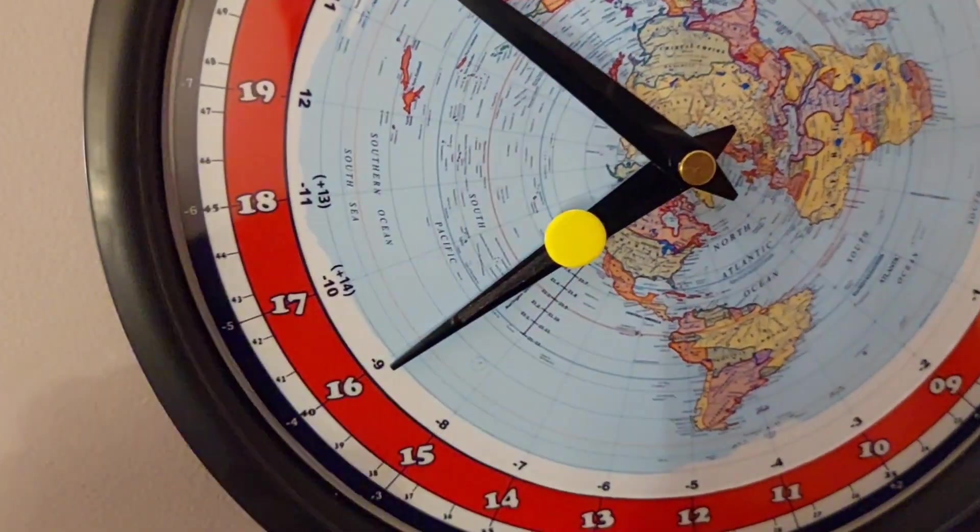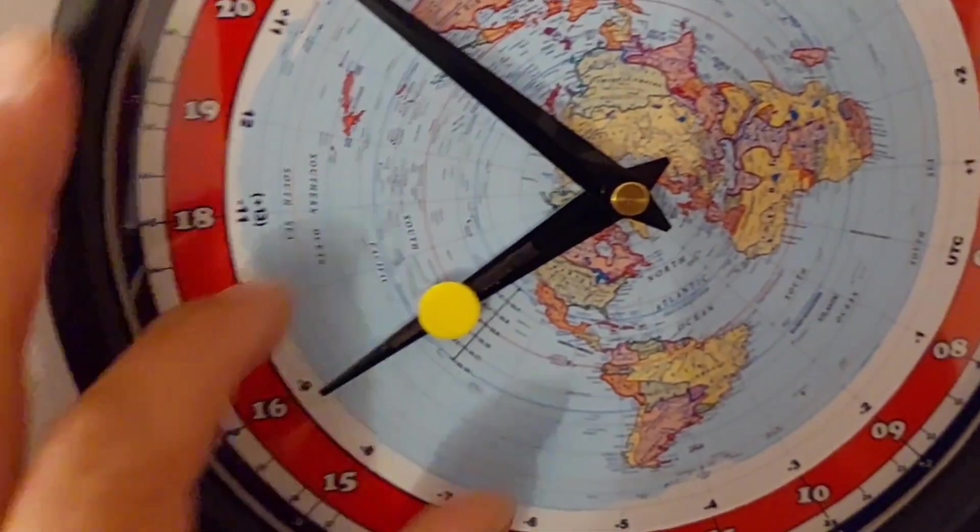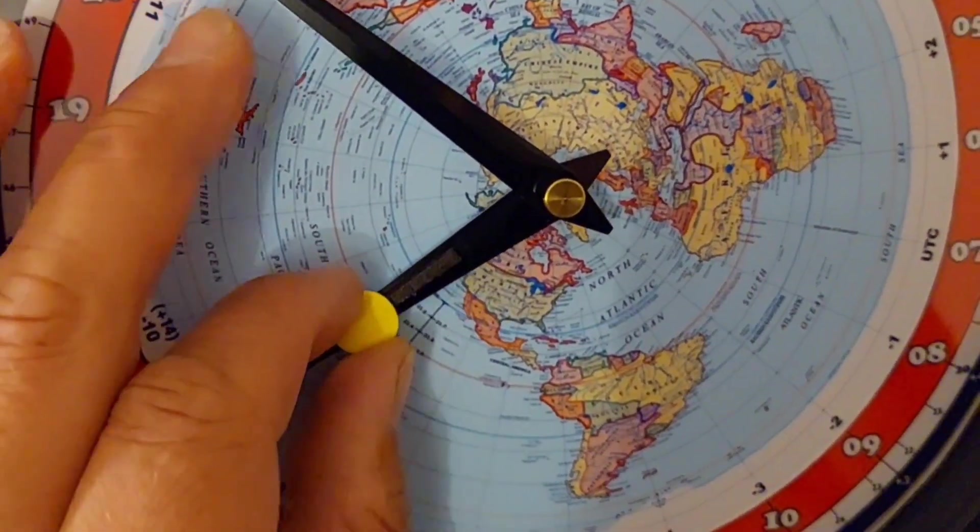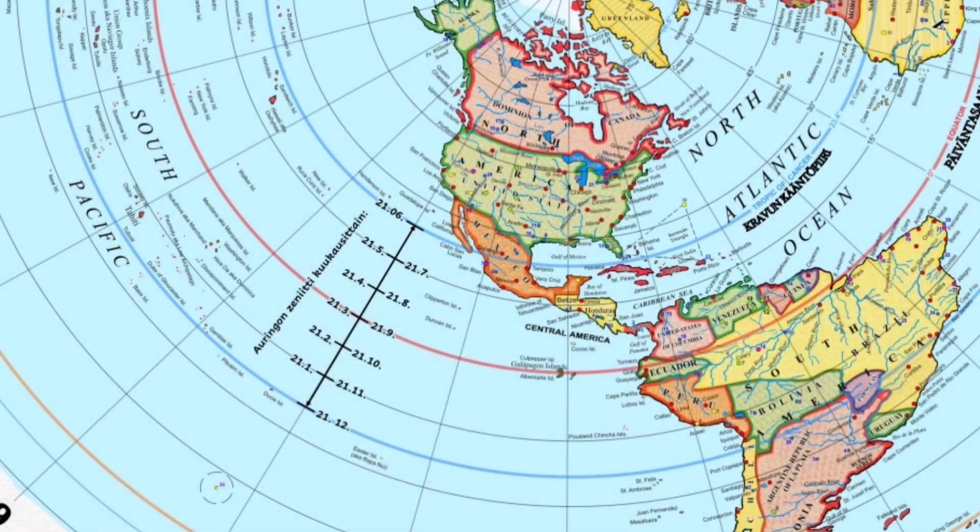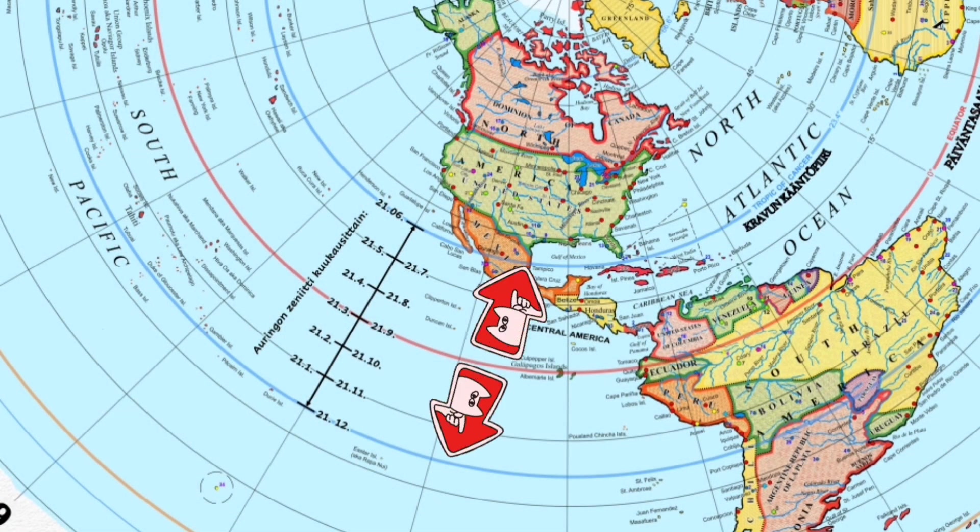Moving the sun on the hour hand. Changes in the sun's zenith point according to the seasons. In real life the sun's zenith point changes also in the north-south direction during the year. It changes between tropics.